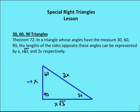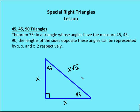The second special family is the 45-45-90 triangle. Theorem 73 says that in a triangle whose angles have the measure 45-45-90, the lengths of the sides opposite these angles can be represented by x, x, and x-root 2, respectively. Both sides opposite the 45-degree angles are x, and the hypotenuse has a relationship of x-root 2, or root 2 times either side.